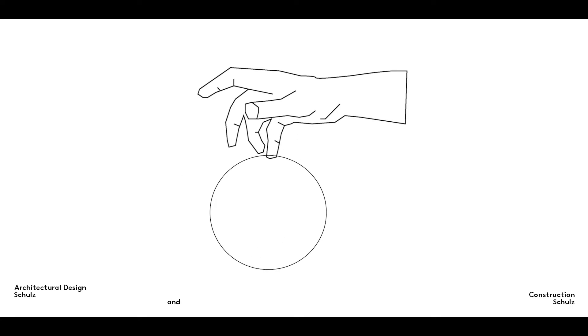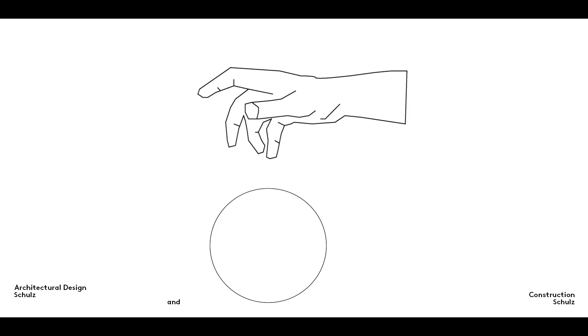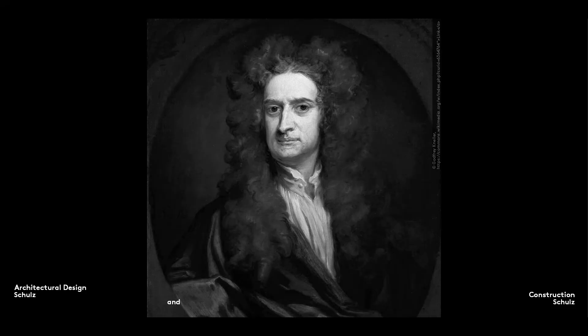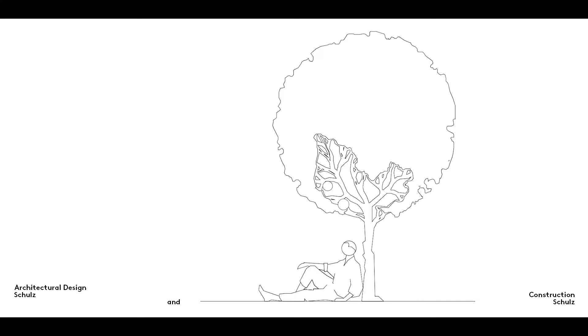Objects have been falling to the ground when dropped ever since the Earth was formed. It wasn't until the 17th century, however, that mathematician and physicist Sir Isaac Newton first explained why. Legend has it that in the year 1665, or thereabouts, he was hit by a falling apple as he sat under an apple tree.